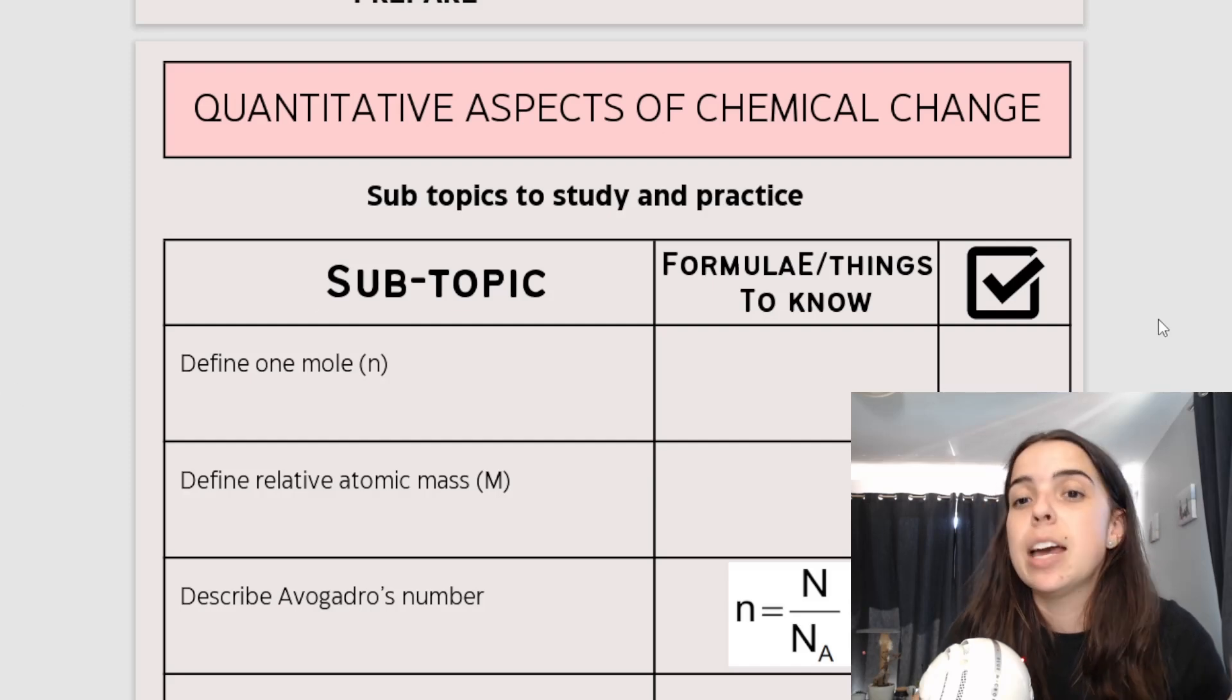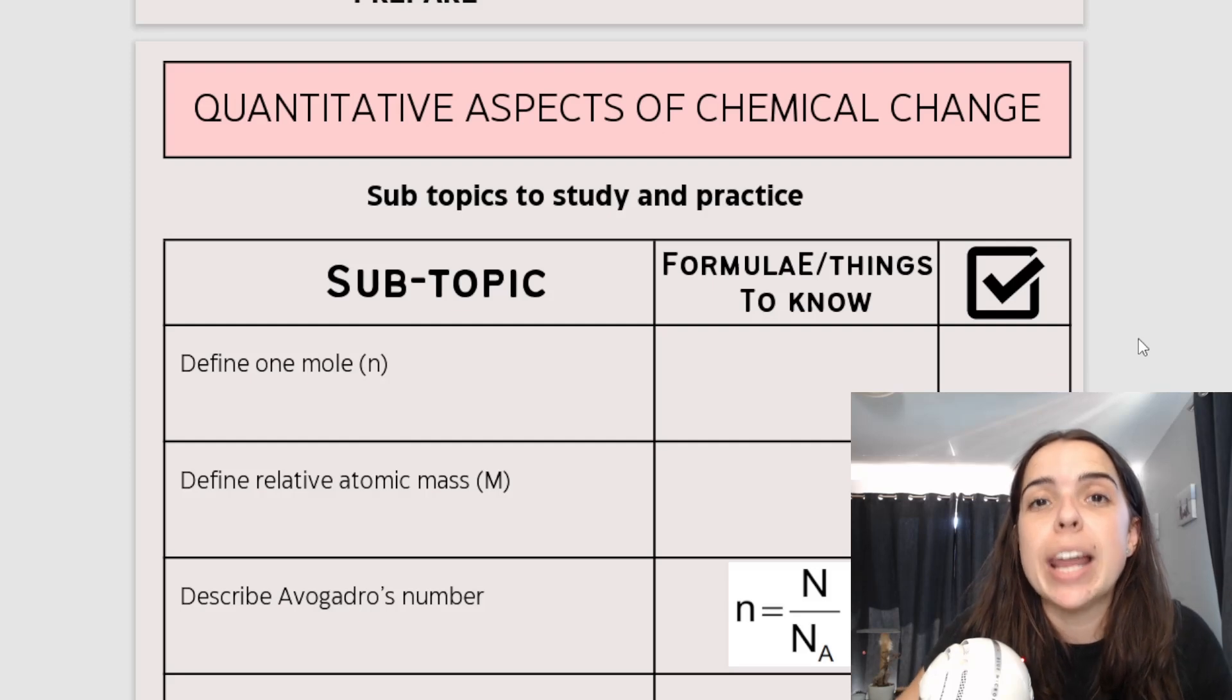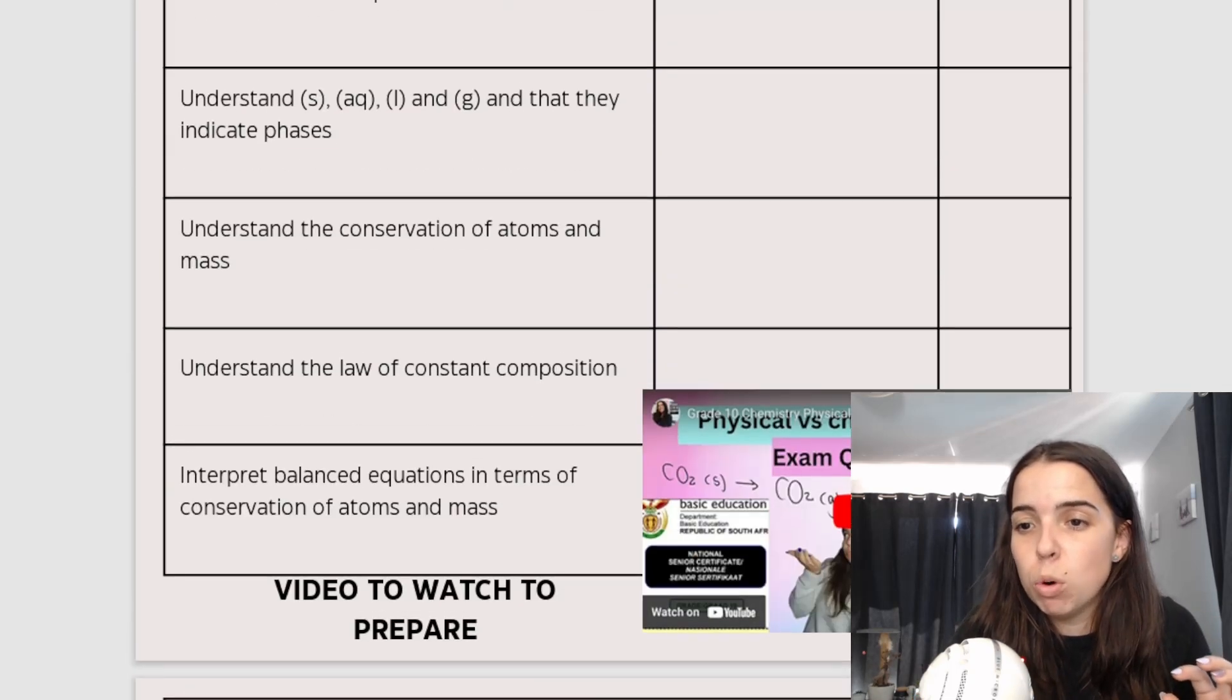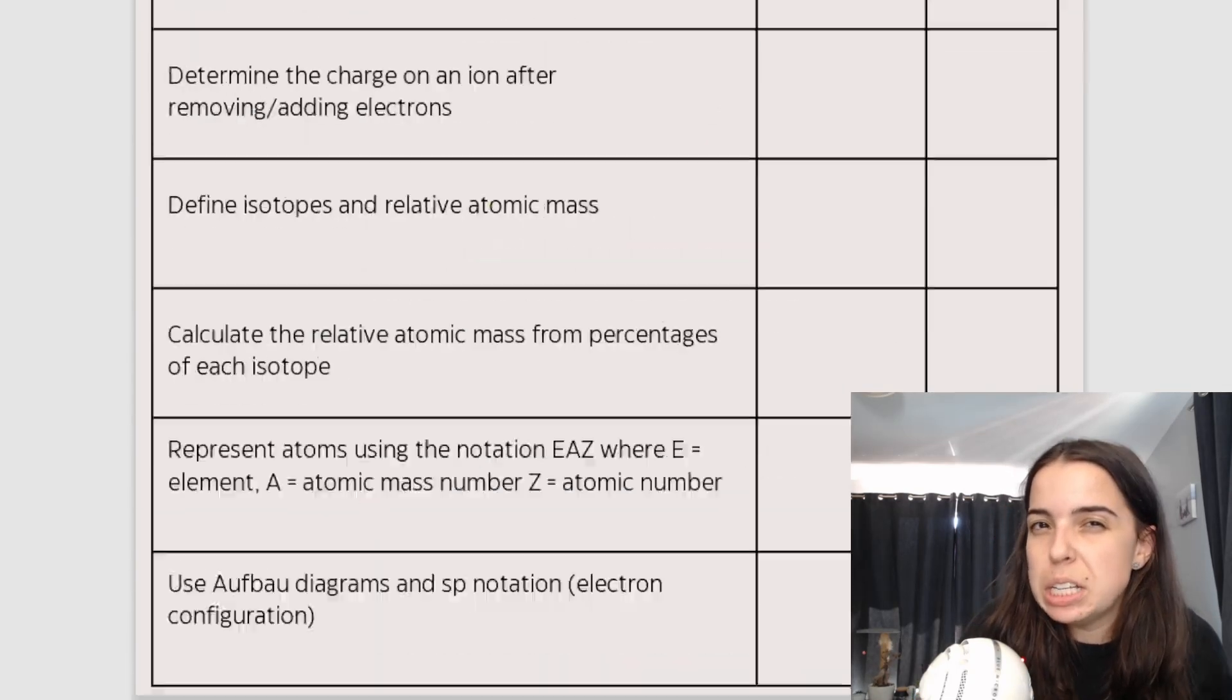And basically this is the calculation part of chemistry. A lot of people struggle with this. A lot of people are like, oh, because most of the term, like all of the stuff is mostly theory, although obviously you have to understand the concepts.